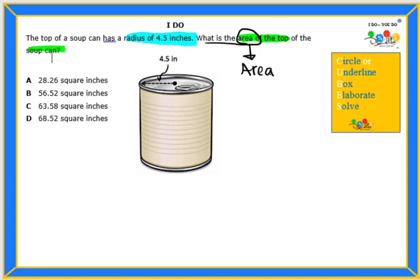What shape is the top of the soup can? That's right, it's a circle. So we want to find area of a circle on the formula chart. Good, so we are going to use area equals pi r squared.